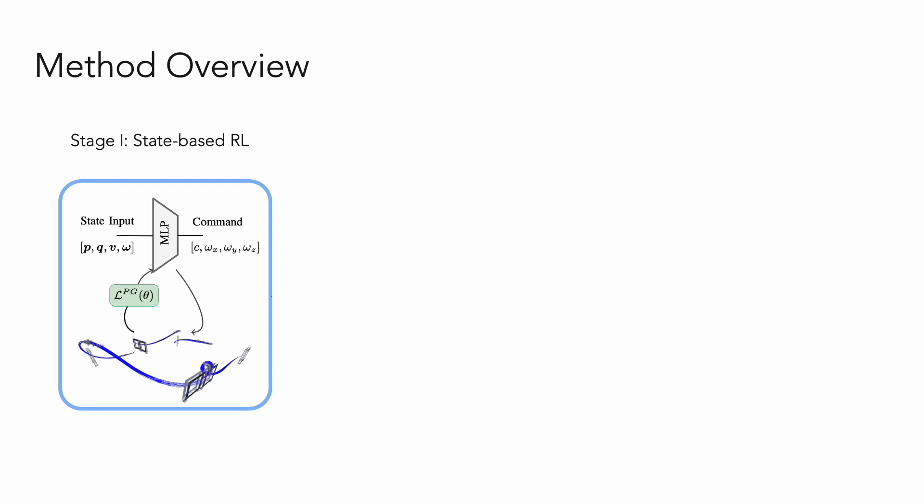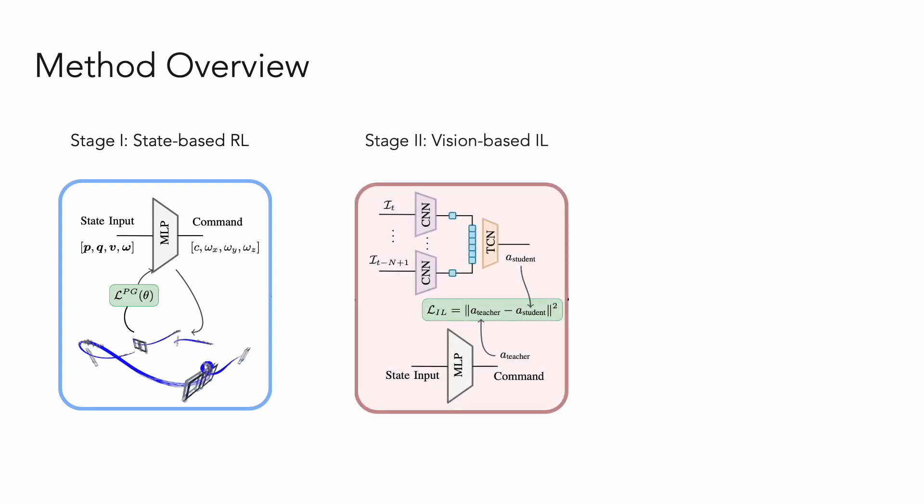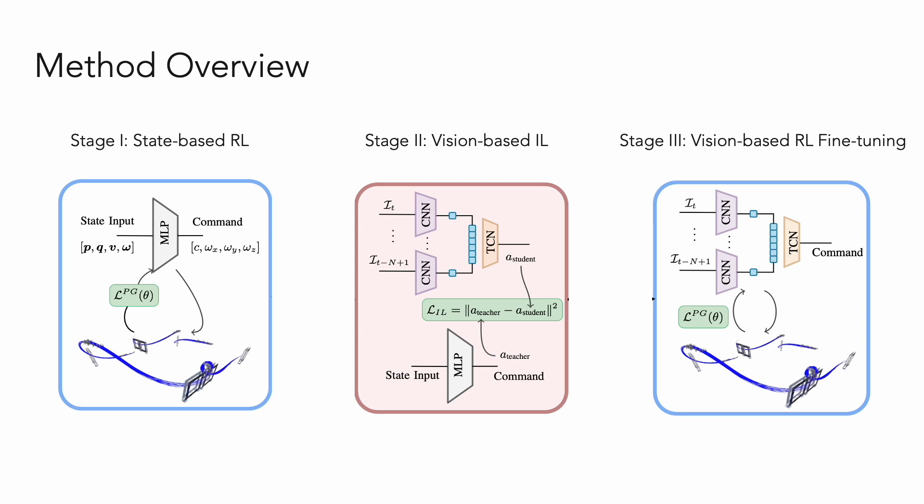Our framework has three stages. First, we train a policy using RL with privileged state information, like position and orientation. Next, a student policy imitates the teacher using only pixel data. Finally, we fine-tune the policy with vision-based RL, using an adaptive strategy to prevent catastrophic forgetting.